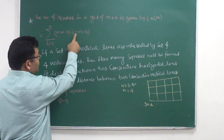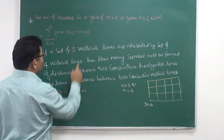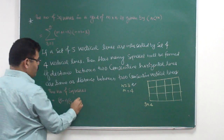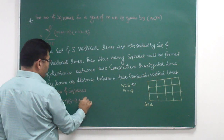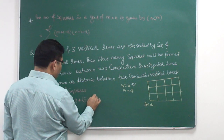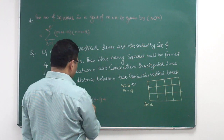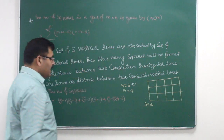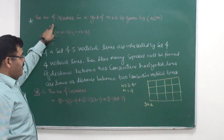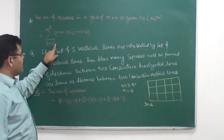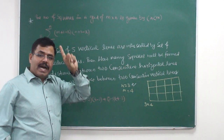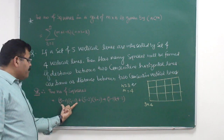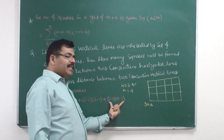M is 4, so M + 1 = 5; N is 3, so N + 1 = 4. For r = 1: (5 − 1)(4 − 1). For r = 2: (5 − 2)(4 − 2). For r = 3: (5 − 3)(4 − 3). We put r from 1 to n, and n is 3, so there are three cases: r = 1, r = 2, and r = 3.